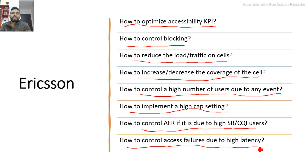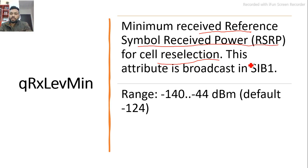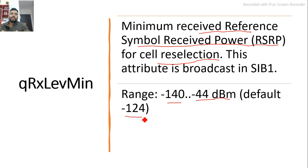The first parameter is qrxLevelMin. This is the minimum received signal — the Reference Signal Received Power (RSRP) — for cell reselection. This attribute is broadcast in SIB1. Its range is minus 142 to minus 44 dBm, and the default value I am using is minus 124 dBm. Let's understand what this parameter means and how it works in the network.